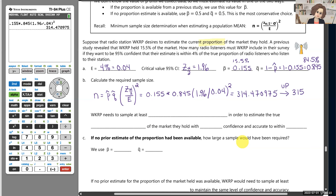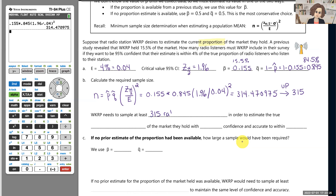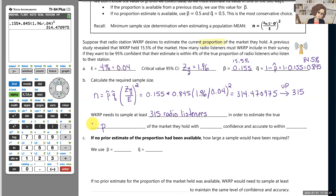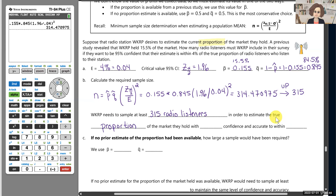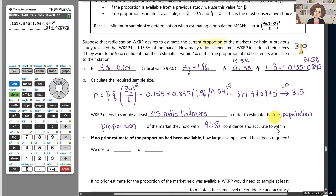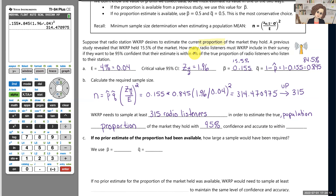WKRP is going to need to sample at least 315 radio listeners if they would like to estimate the true population proportion of the market that they hold. More would be great — this is the bare minimum — but that's how many they'll need to be 95% confident and accurate to within 4% of the true proportion.